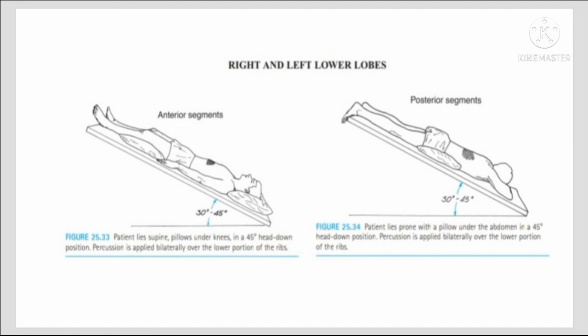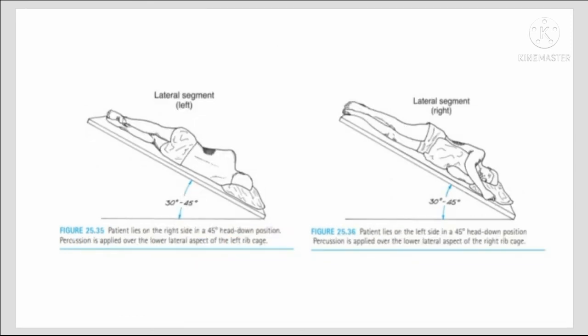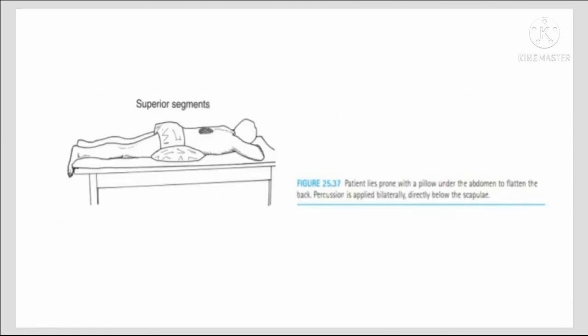Posterior segments: patient lies prone with a pillow under the abdomen; patient is in 45 degree head-down position; percussion is applied bilaterally over the lower portion of the ribs. Lateral segment — left and right: patient lies on right or left side in 45 degree head-down position with pillow under the head and on the side; percussion is applied over the lower lateral aspect of the right or left ribcage. Superior segment: patient lies prone with pillow under the abdomen; percussion is applied bilaterally directly below the scapula.